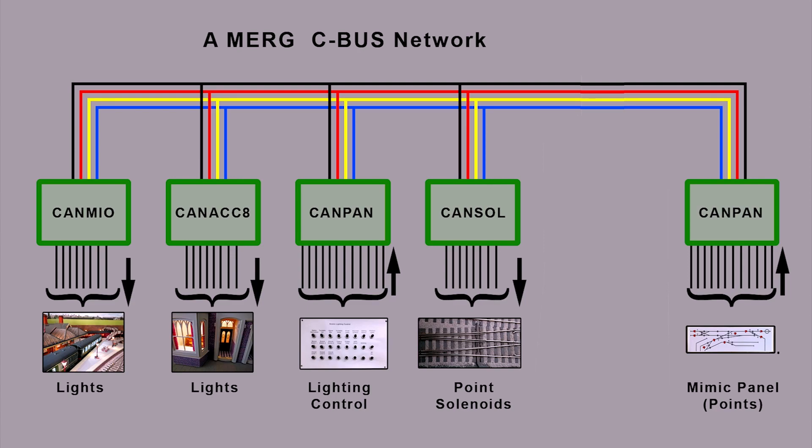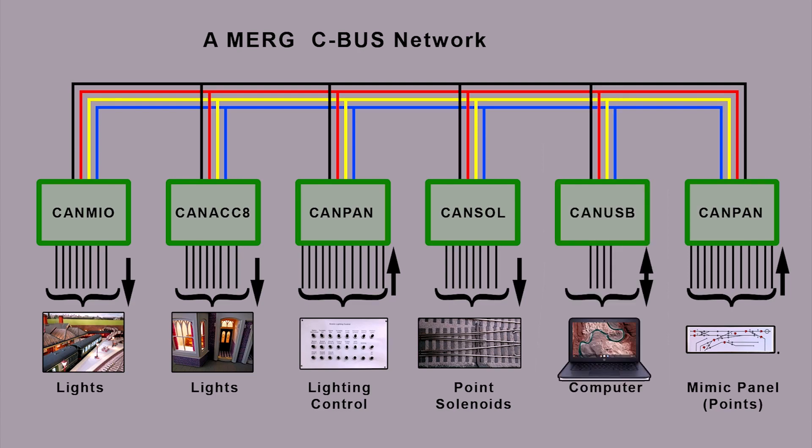There's one final node to look at: the CAN-USB. For me this is the major link and the major benefit of using CBUS. It enables the computer to communicate with all the nodes on the bus, meaning you can drive the entire layout from your computer if you want to. You can set up which switches operate the points and lights, which direction the points go, whether the lights are on or off, whether they flash — all sorts of things using the provided CBUS computer software. On top of that, you can also drive your DCC system from the computer, so you could fully automate the entire layout.